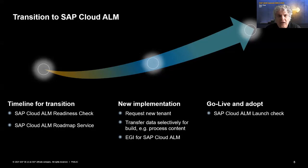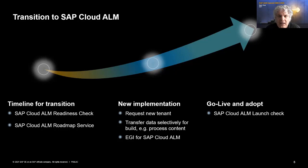This is also subject to customer influence. We have started influencing groups, also in the German user group, where we are discussing these topics. You might remember the situation with 7.2, where two years before the release we started discussions about how to move solution documentation from 7.1 to 7.2 — and when the release was ready, all the tooling was available too. We're striving for the same approach for the transition from Solution Manager to Cloud ALM. Already today, we have expert guided implementations and an SAP Cloud ALM launch check available through Preferred Success and Enterprise Support.